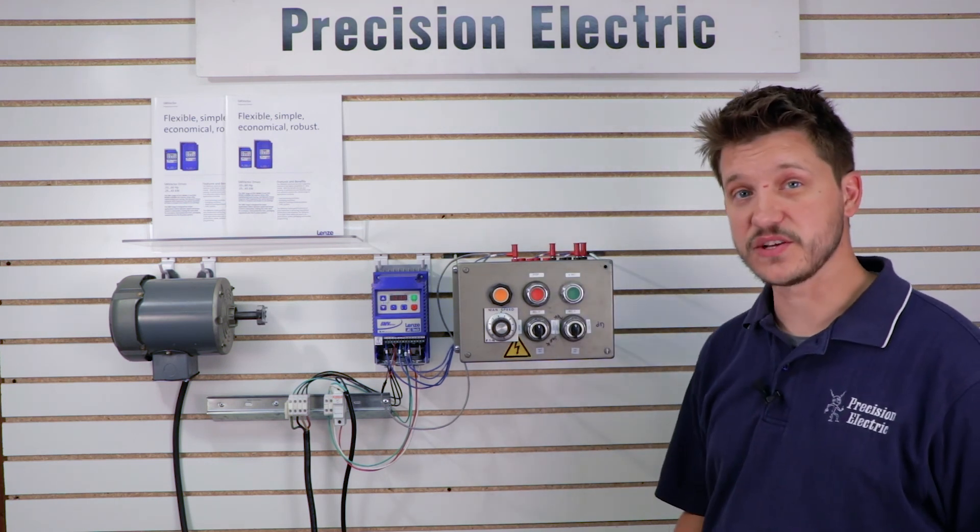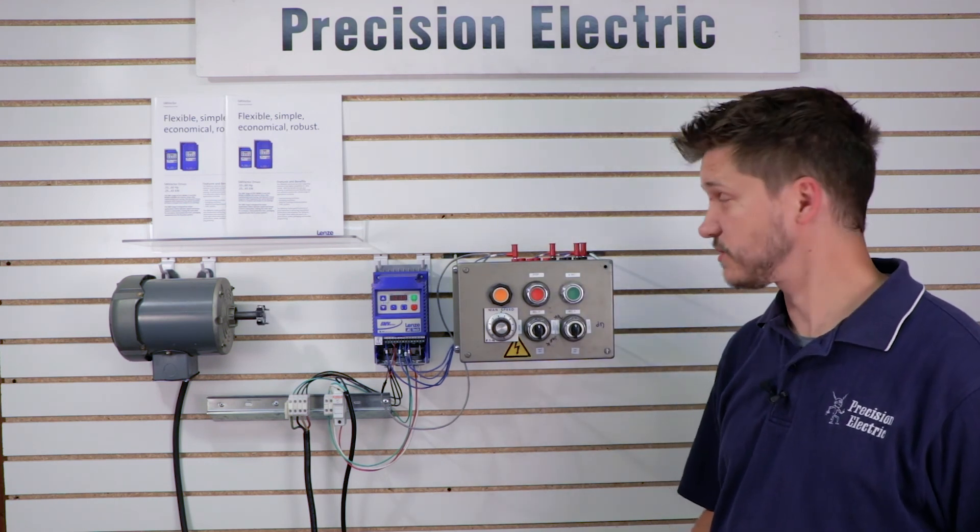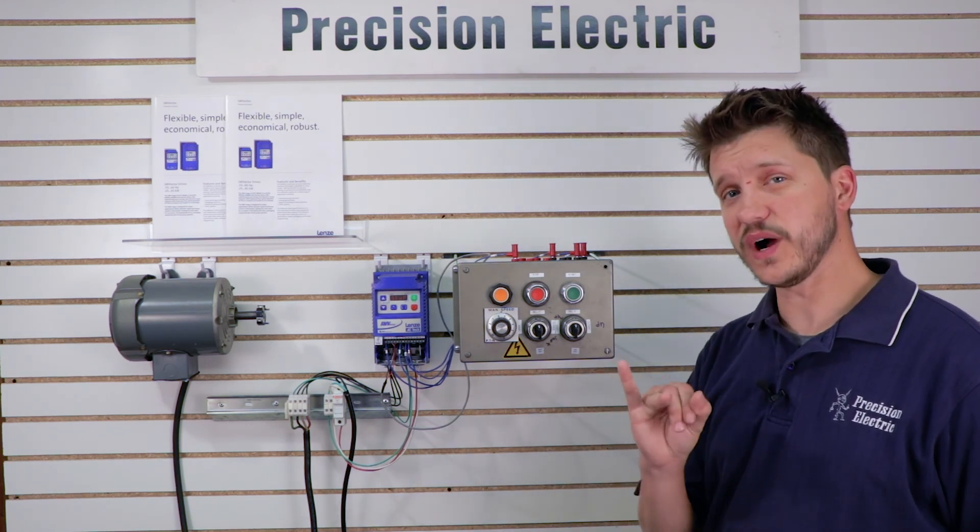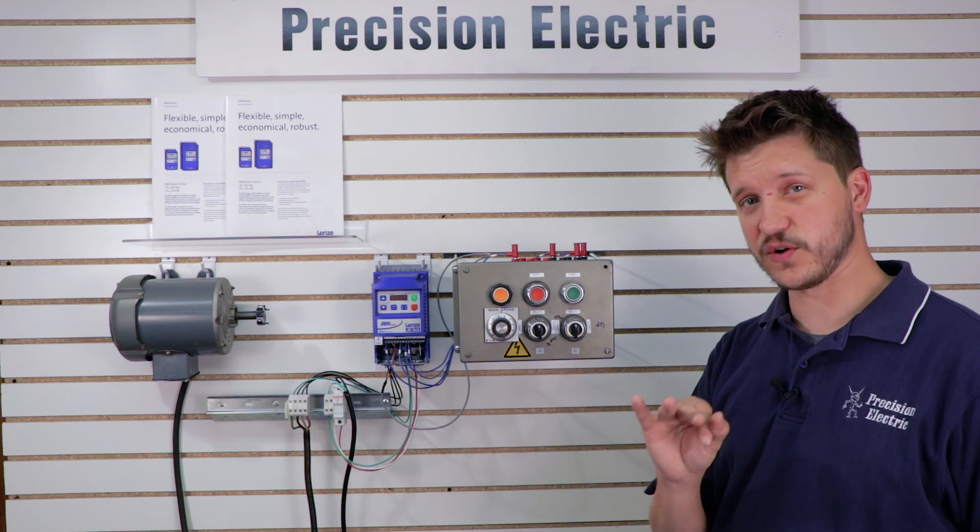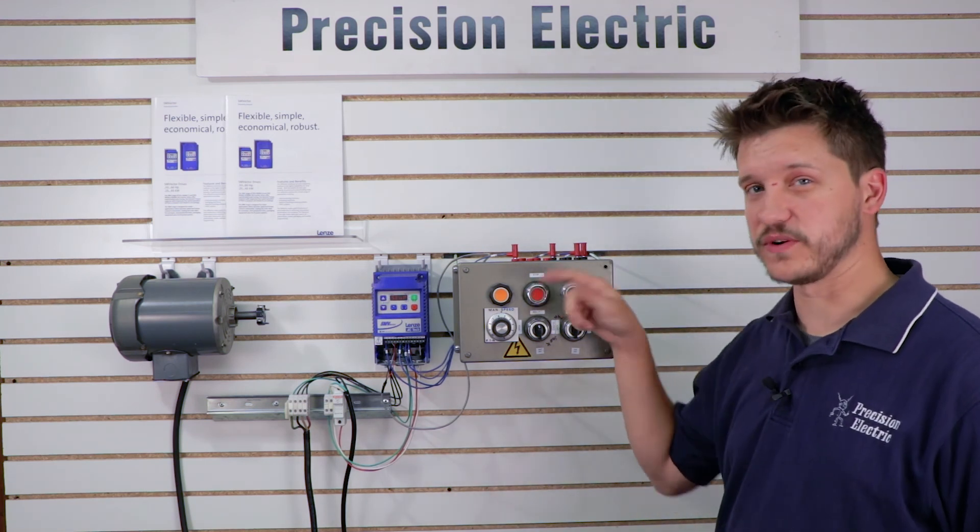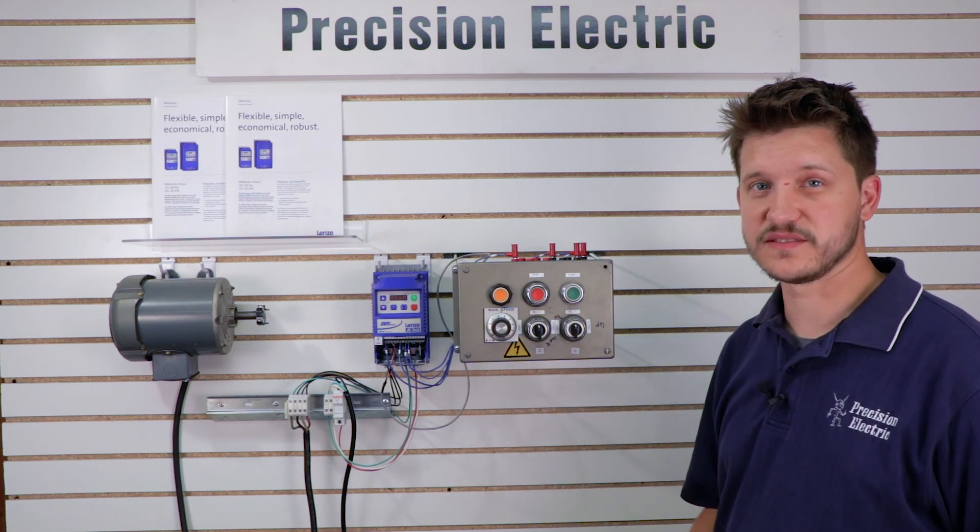But that's pretty much all there is to it. That's how you wire your two-wire start-stop control. And they call it a two-wire mostly, because usually you only need two wires to run forward. We added that third wire for the reverse. But typically, it's just a forward and stop on a two-wire start-stop control.